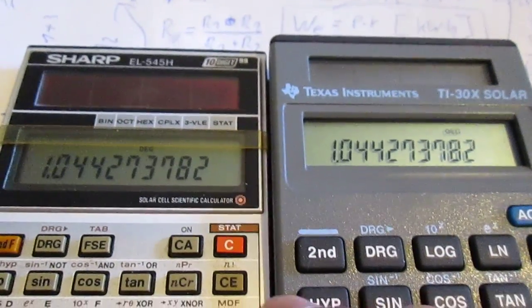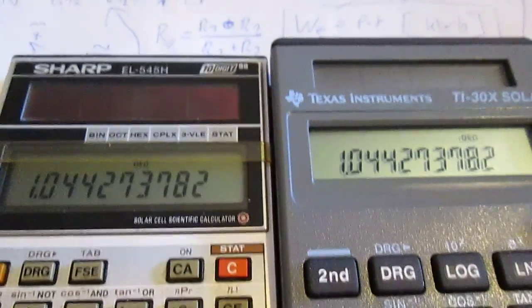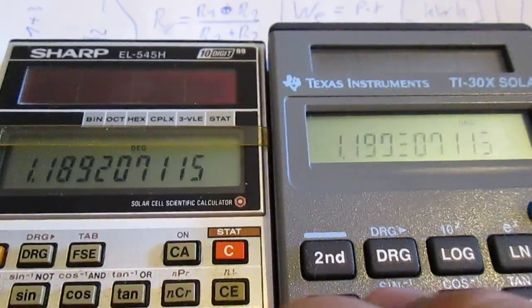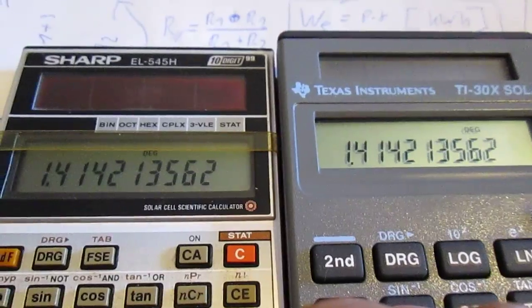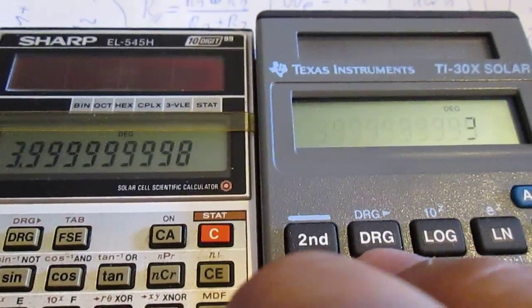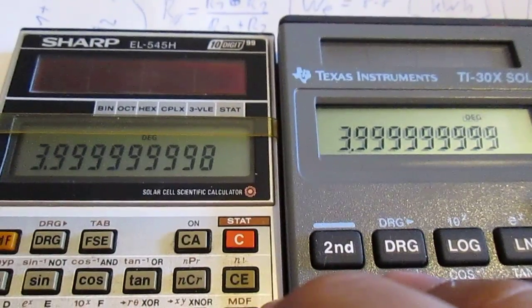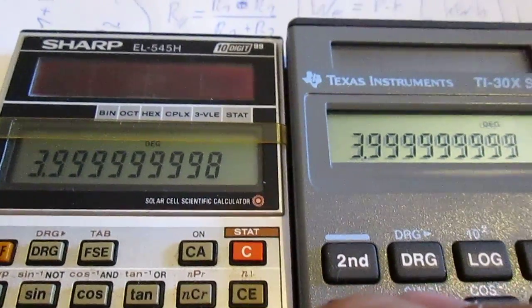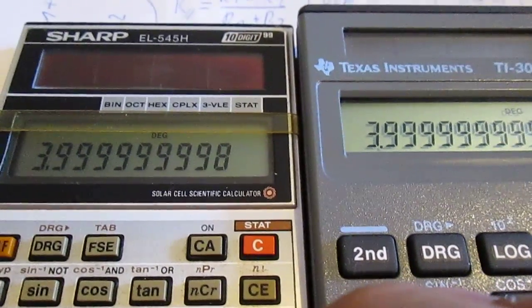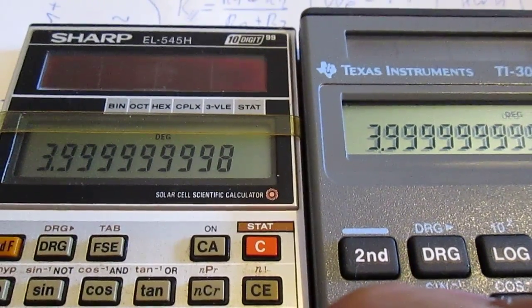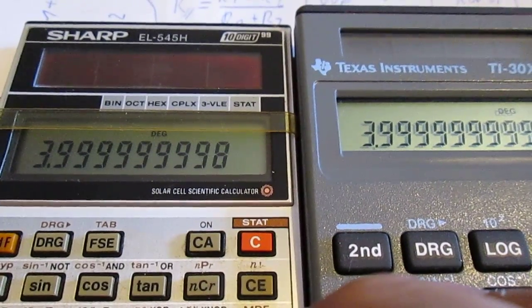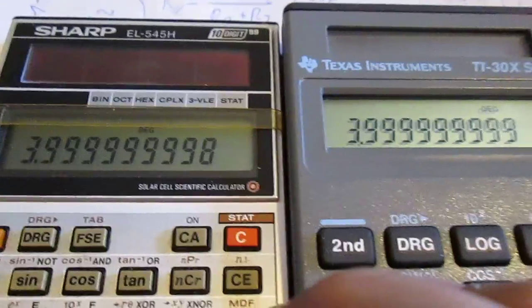And now I would like to square again to show you something that is a little bit strange for me. I cannot explain what's going on. I have got the number two, but here is a little bit different. On the left side I get not four, but 3.99999998, and on the right side 3.999999.